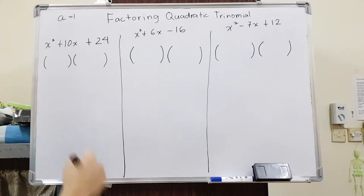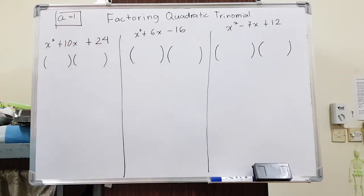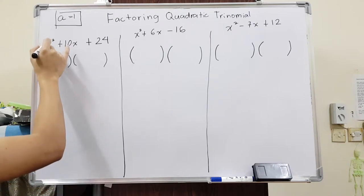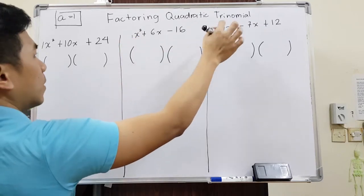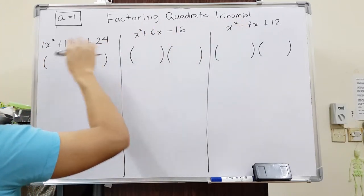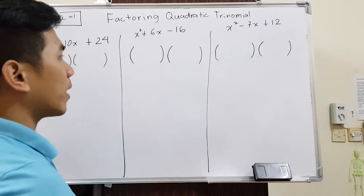Take note that it only works when a is equal to one. When you say a is equal to one, basically the number before the x squared is just one. As you can see, there's an imaginary one here, but we don't have to show it. This method only works on those cases. And how does it work? First thing that you have to do is I'm going to make a T-table here.